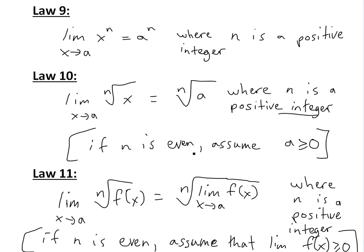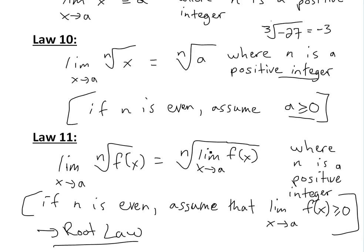If n is even, then assume this a is greater than or equal to 0 because you can't have a negative there. But if it's odd, you could have something like this here. You could have a negative. This is an odd number here because then you're just going to get negative 3 as the answer. Because negative 3 times negative 3 is positive 9 times it by negative 3 is negative 27 here. But if you have an even number, you're always going to get positive, so you can't have a negative number inside here unless you deal with imaginary numbers.